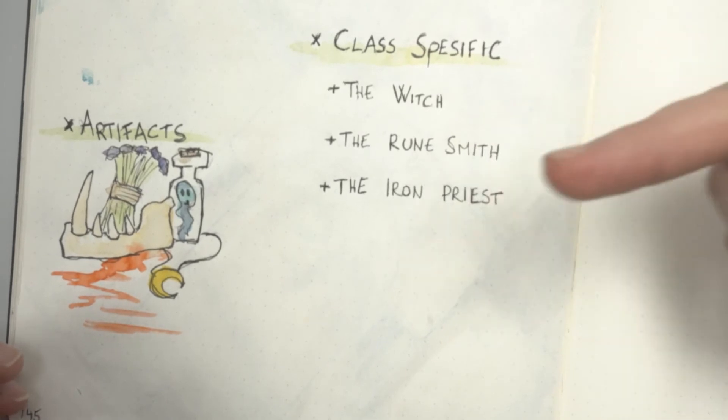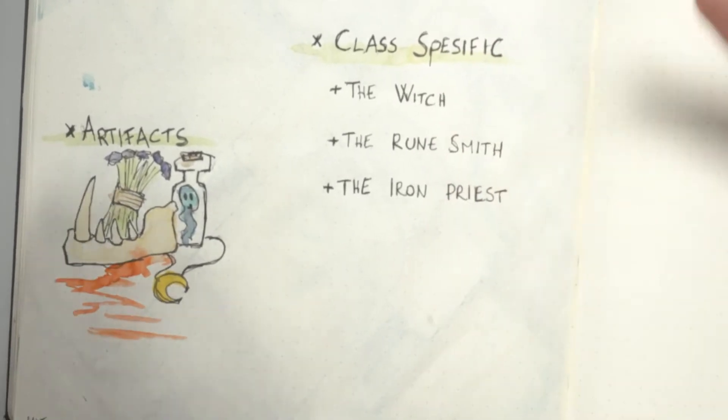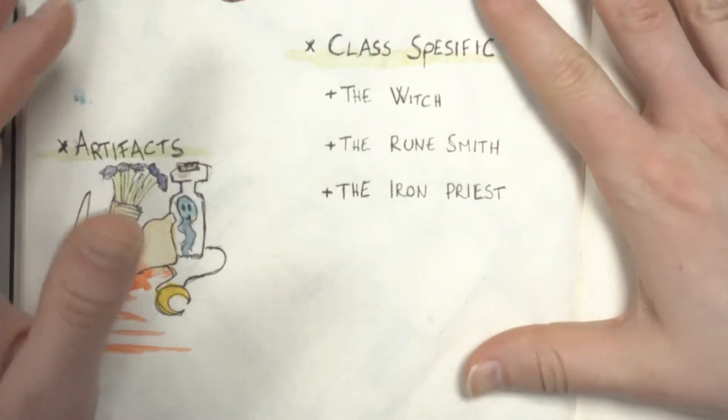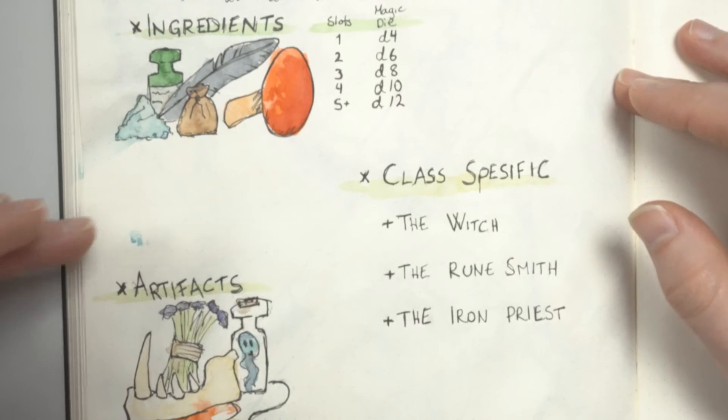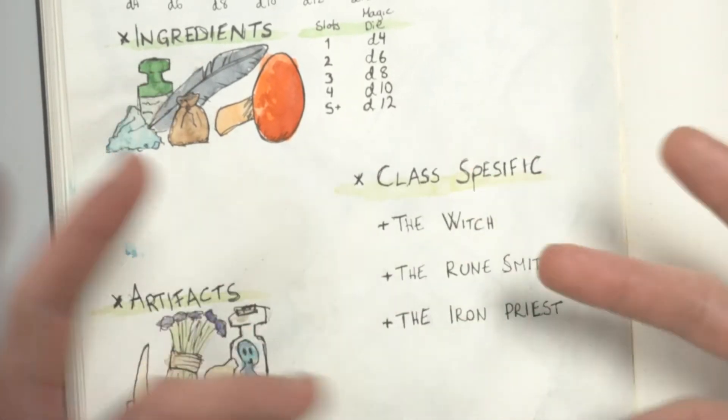The witch, or druid, or shaman, or alchemist, or whatever, double down on the use of ingredients. Currently, I'm planning on giving them so-called focused ingredients that work like ingredients, but that also have an aspect to them.